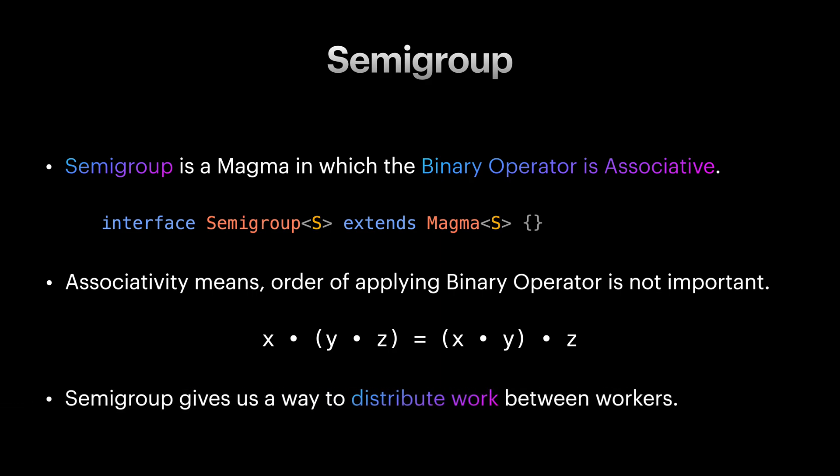The associativity provides us a powerful model to run our code in parallel. It gives us a way to distribute work between processes, machines, and workers. But before getting into that, let's check a few examples for semigroups.